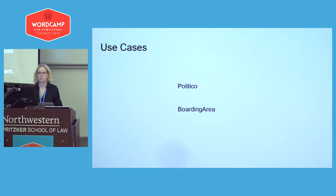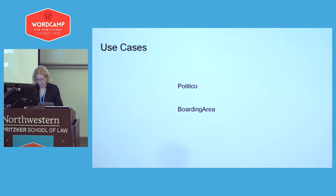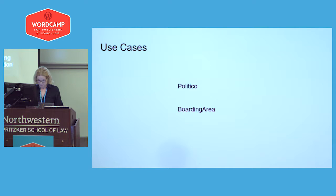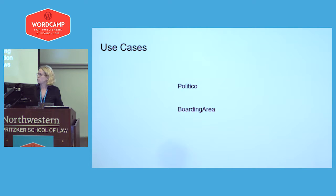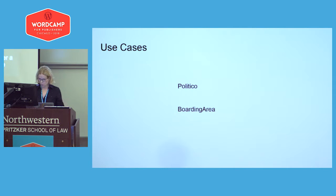Here are a couple of use cases — publishers you may have heard of. Politico is a leading European news organization with a need to publish news very quickly. And Boarding Area is a travel blogging network with over 100 blogs around the world. In both cases, they used Amazon Polly and Translate to reach a wider audience.